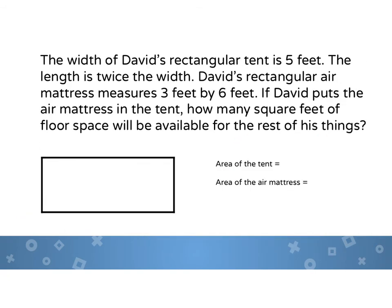Okay so here's another real world problem using the formula for area and perimeter. So the width of David's rectangular tent is five feet. The length is twice the width. David's rectangular air mattress measures three feet by six feet. If David puts the air mattress in the tent, how many square feet of floor space will be available for the rest of his things? So basically I need to figure out the area of the tent and then I need to subtract from that the area of the air mattress. So let's try that.